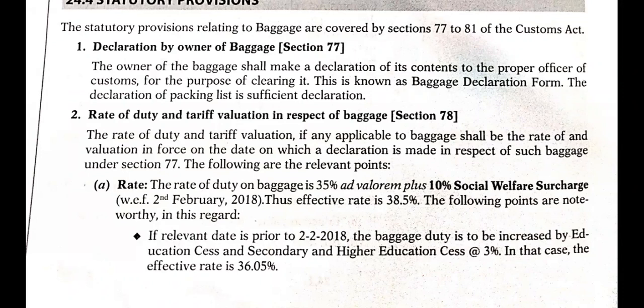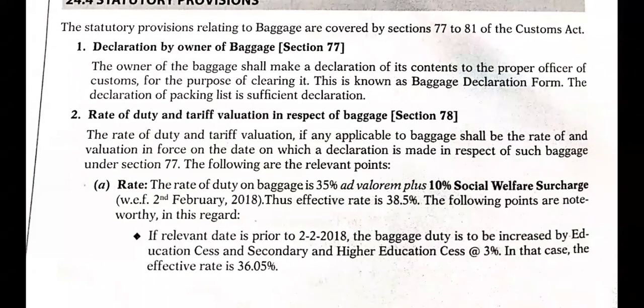As per Section 77, the person who is the owner of the baggage shall make a declaration in writing using the baggage declaration form. In that form, you need to write all the contents and then indicate whether you are carrying dutiable goods or non-dutiable goods. When this is mentioned, it will be sufficient declaration and you proceed to the next step.